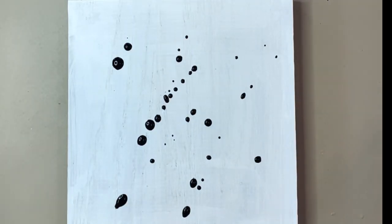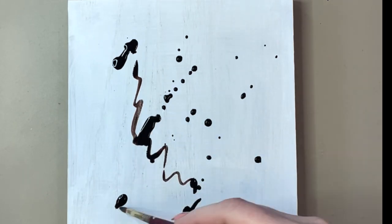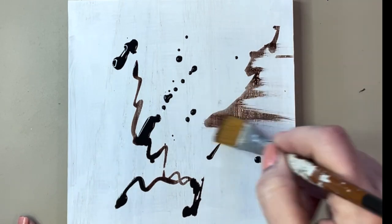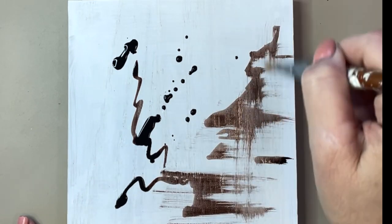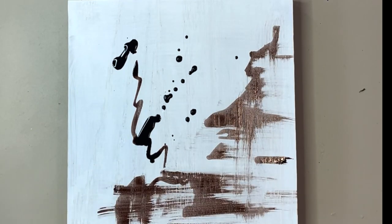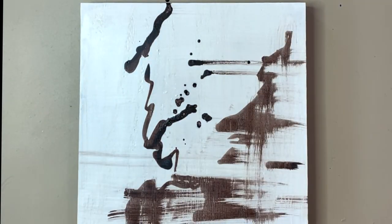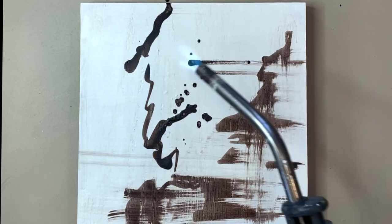First way to use ink, put it right directly on your gesso board. Making marks, using brushes, splattering it, however way that you would like to use it to add some interesting abstract shapes. You're going to cover that with your encaustic medium and of course fuse.